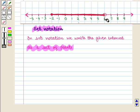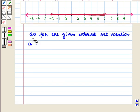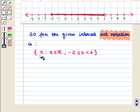So for the given interval, set notation is: set of all real values of x such that x is greater than or equal to minus 2 and less than 6. Here, less than or equal to sign indicates that minus 2 is included in the interval, and less than sign indicates that 6 is not included in the interval.